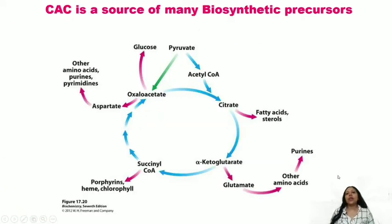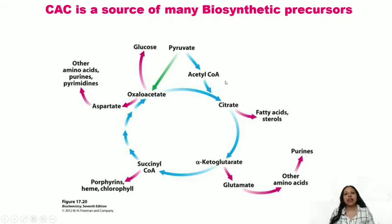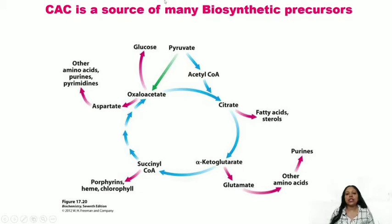Dr. Hans Krebs, who discovered the citric acid cycle, received a Nobel Prize for this discovery. His work gave us insight into ATP production, various intermediate forms, and the functions of various intermediates, as shown in the flow chart on this slide.